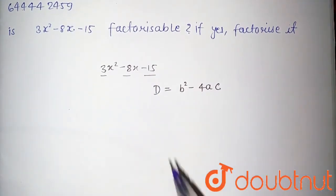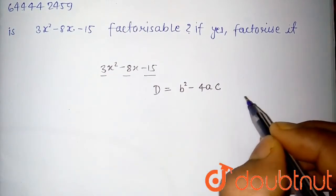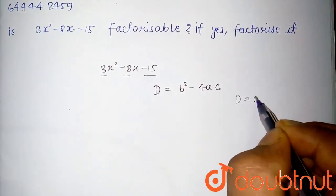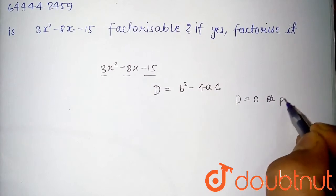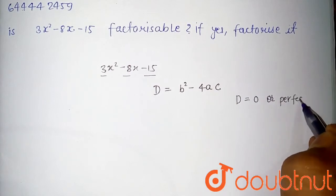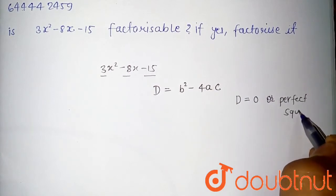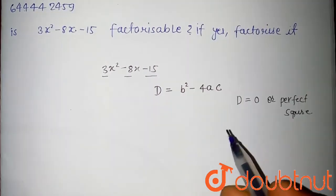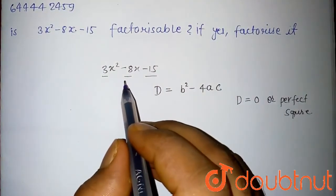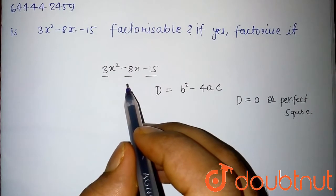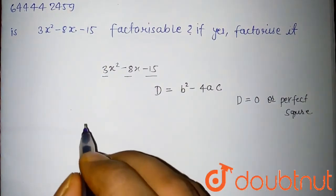If the value of D is 0 or a perfect square, then this quadratic equation should be factorizable. So now first find D.